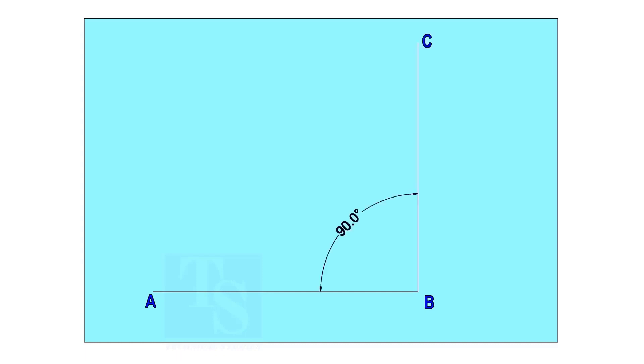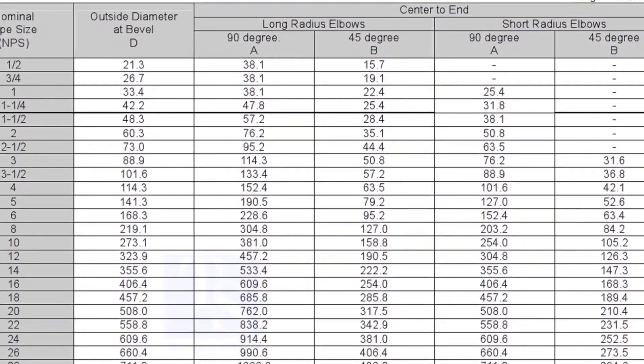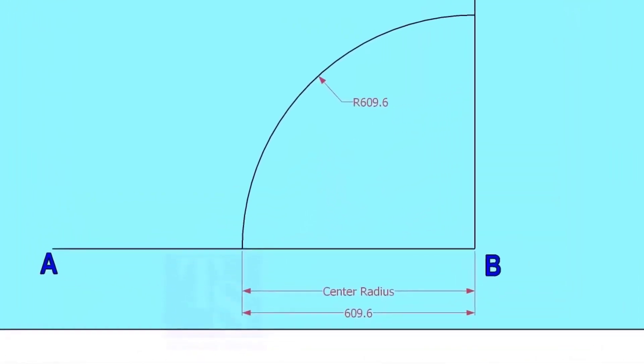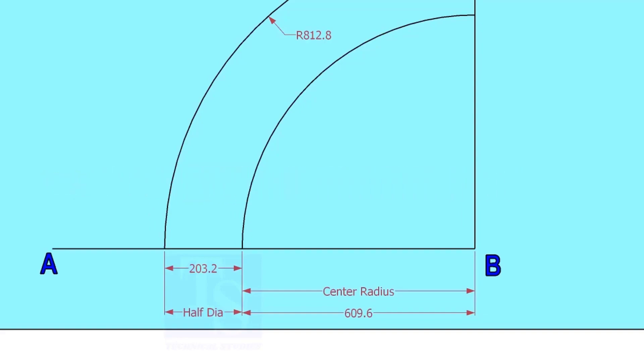Mark line AB and a perpendicular line BC. Let us check the center radius of 16-inch long radius elbow. Draw an arc with the center radius 609.6 millimeters. Mark the half OD arcs on both sides of the center line.